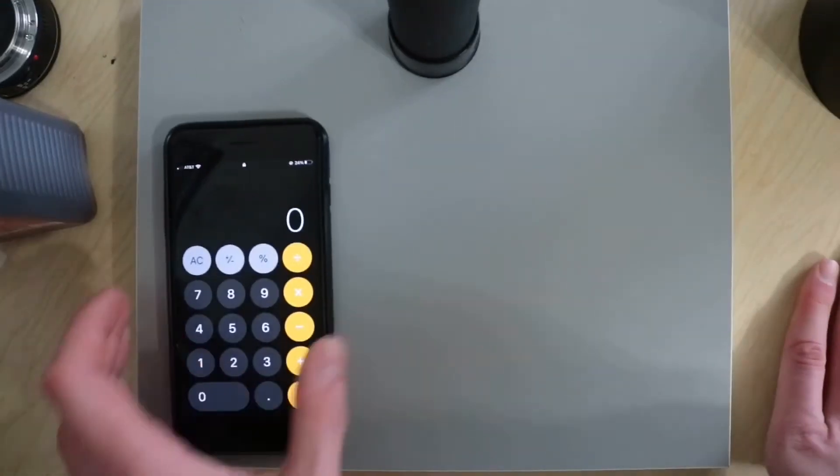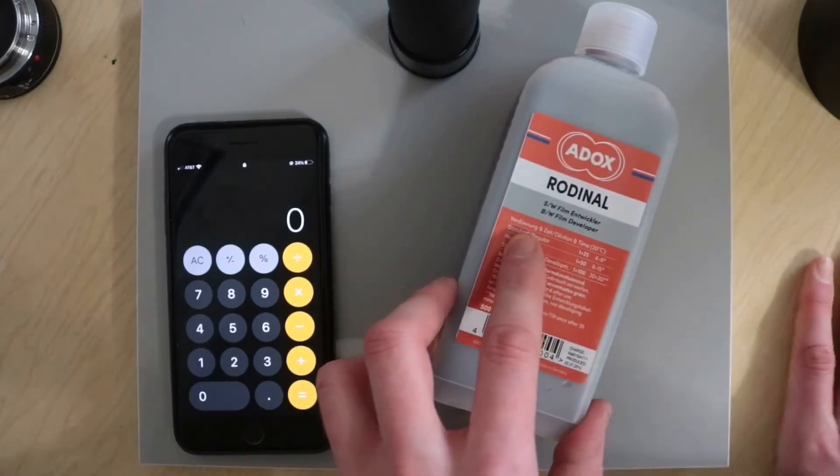So you're going to need that number to calculate your dilution. You can just use your cell phone calculator for this. Super simple math.